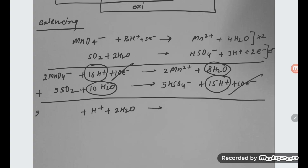This side you see, this is 2MnO4 minus plus 5SO2. This side it is going to be 2MnO2+ plus 5HSO4 minus. So this is all about the balanced equation.